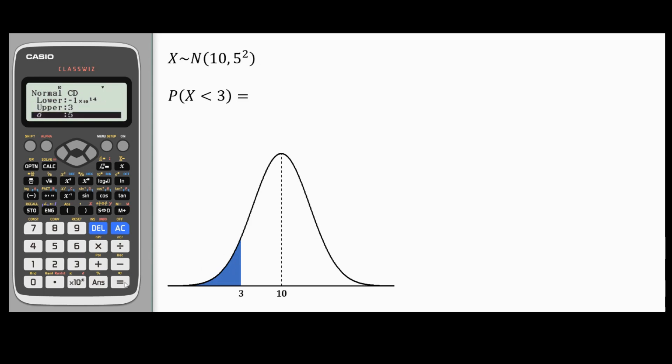Now I'm all set to get the probability. If I hit the equal button, I'll get 0.0807 and so on. If you round this to four decimals, it's 0.0808.